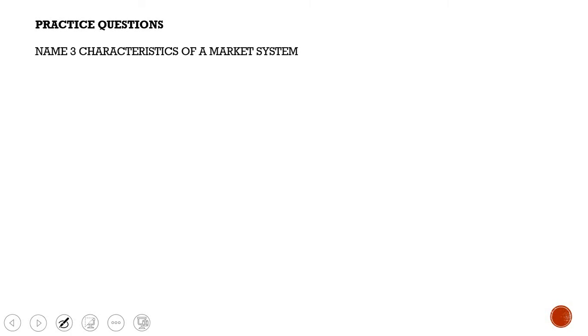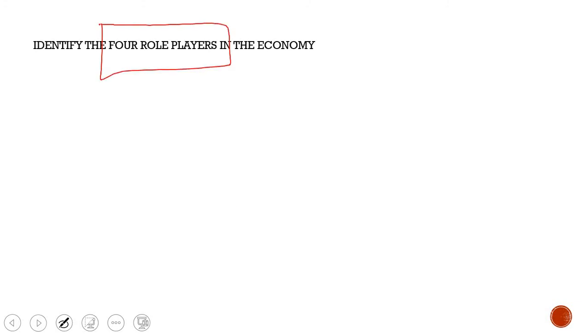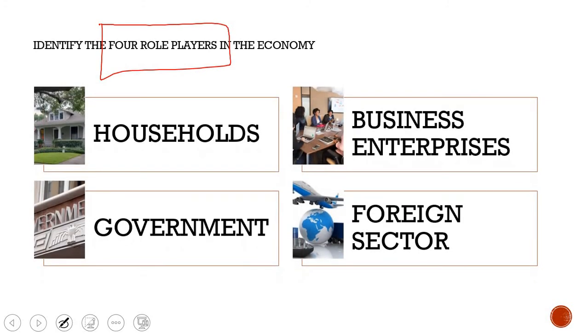Now we look at some practice questions. The first one asks to name three characteristics of a market system: private ownership of resources, own self-interest, and the use of markets and prices to coordinate and direct economic activity. The second asks to identify the four role players in the economy: households, government, business enterprises, and the foreign sector.